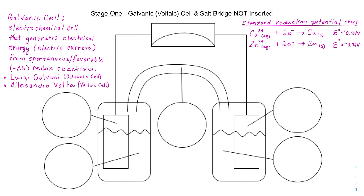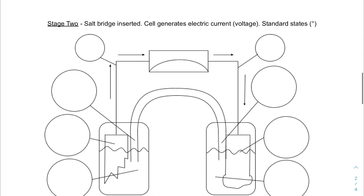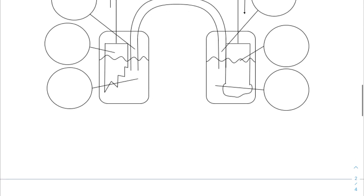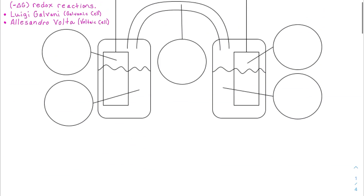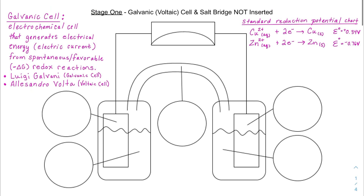If you'd like a copy of these notes with the galvanic cells already built, go to the YouTube description below, click the Google link, and make a copy. You can have a digital copy, or if you'd like a paper copy, print it back to back, fold it in half — hamburger style — staple it at the top, and you'll have a flip book with all of these images for the videos on galvanic cells.